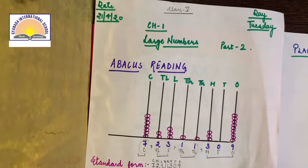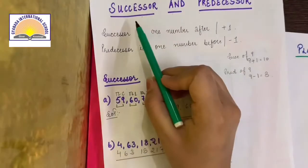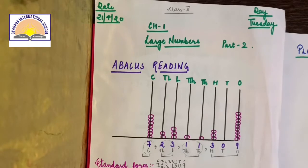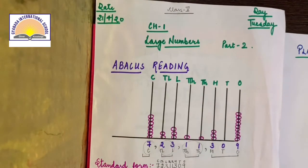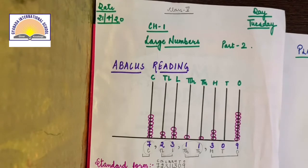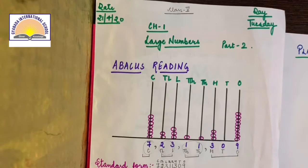We learnt about Abacus reading, word form, and successor and predecessor. I gave you homework to do question 1 and question 2 in exercise 1a. Although I have received homework from two students only right now, I have not received it from everyone. You all have to do it and send it to me regularly. You have to complete question number 1 and question number 2 which was about the Abacus reading and writing in word form.